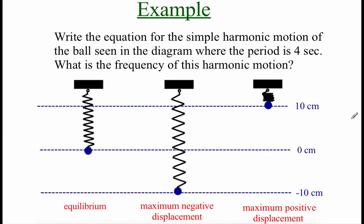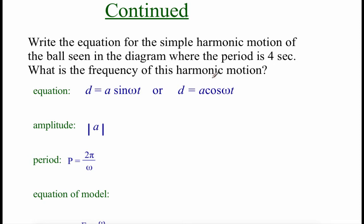Here's an example: we need to write the equation for the simple harmonic motion of a ball on the end of a spring with a period of 4 seconds, then find its frequency. The ball starts at the equilibrium point, gets stretched down to its maximum negative displacement of −10 centimeters, then bounces up to its maximum positive displacement of 10 centimeters. Since at time zero the displacement is zero, we must use a sine equation.